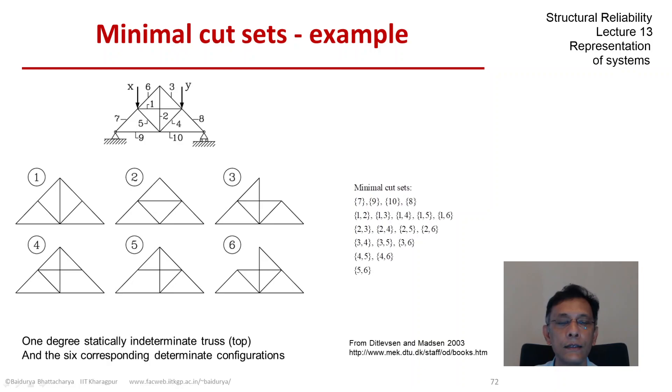So seven, nine, ten, and eight, these are the four minimal cut sets by themselves. And then we have all the 15 that we had before in the previous slide. So one has to be careful when identifying minimal cut sets for a structural system. One has to be careful that no unnecessary simplification or unnecessary pattern is used when none exists.